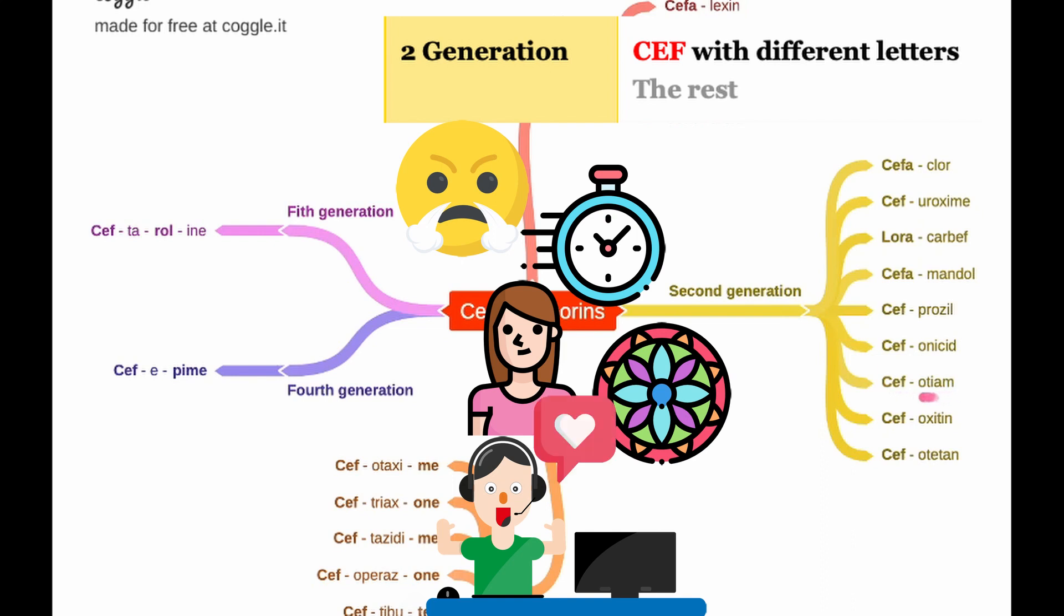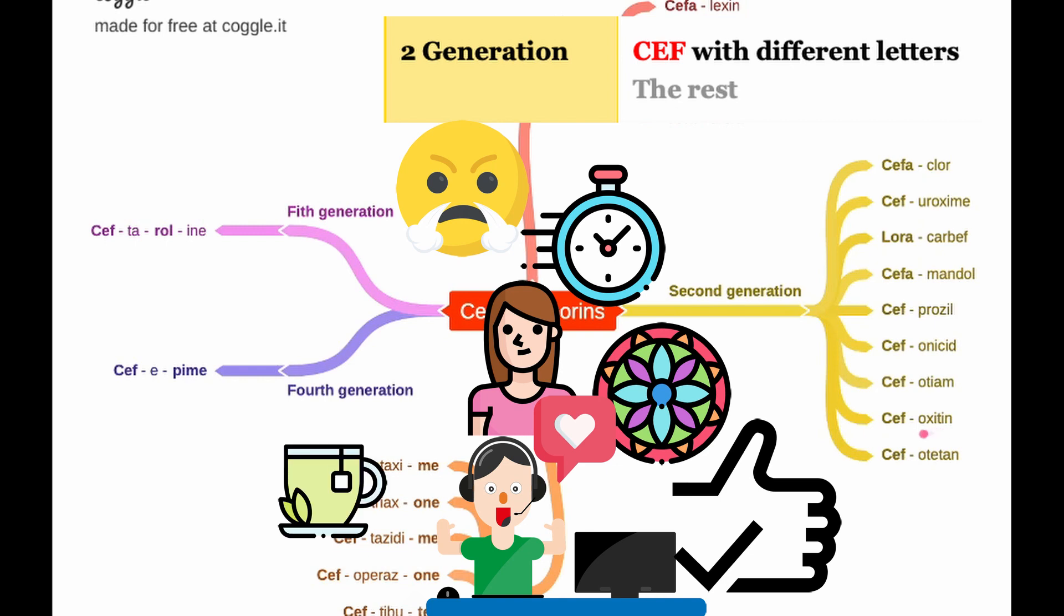Cefonizid, cef-o, nizid sounds like nice. Cefotiam starts with 'cef-o', tiam, ti amo, in Italian you say ti amo when you love someone, ti amo. Cefoxitin, cef starts with 'cef', oxitin sounds like a Chinese xin-tin-ti.